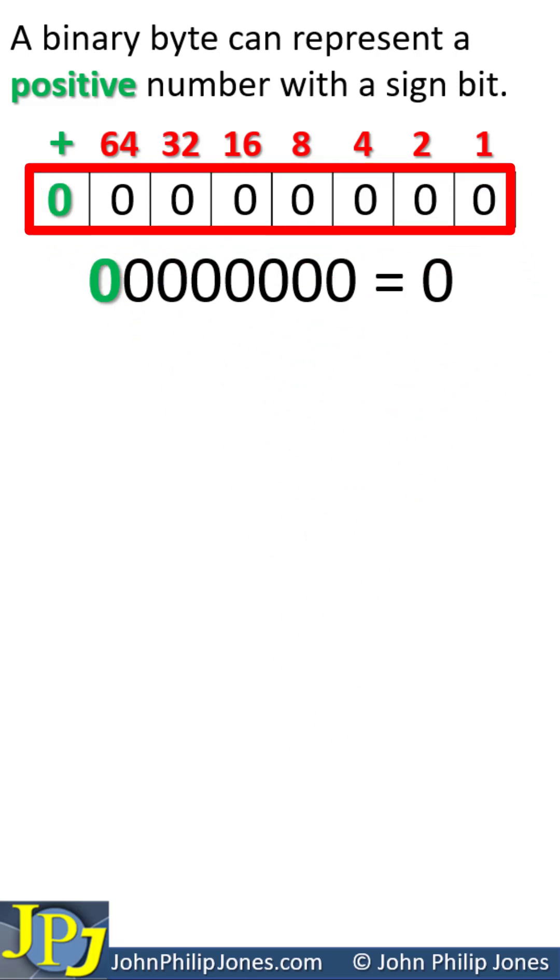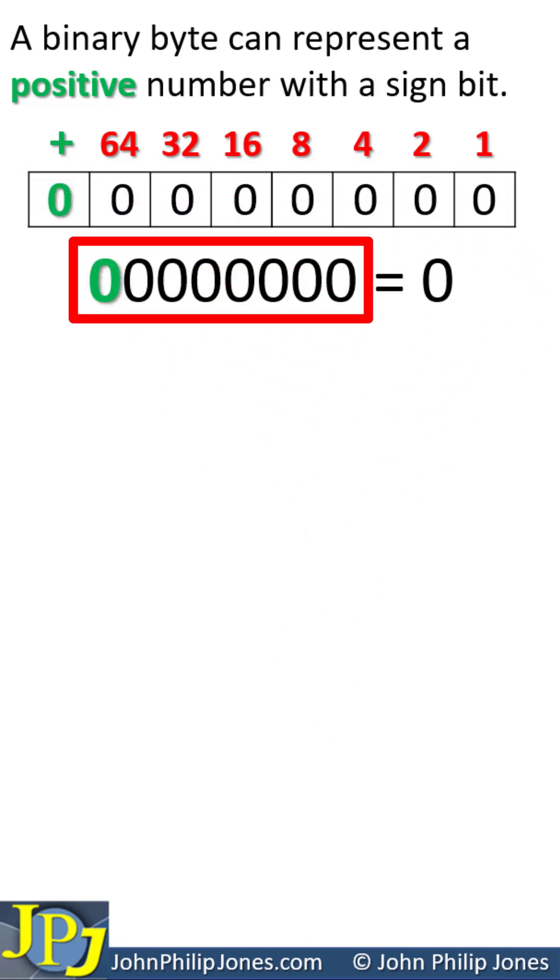If you consider this binary number which I've written down here, you can see every position is a 0, so you're going to have a denary value of 0.